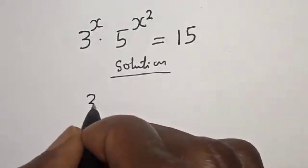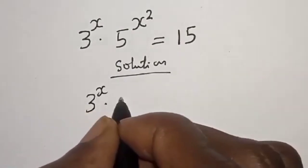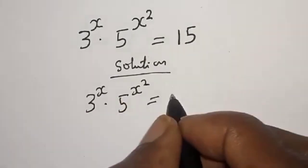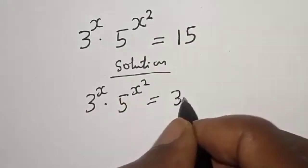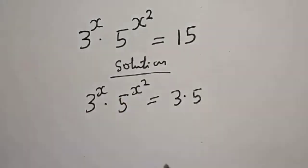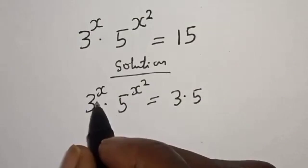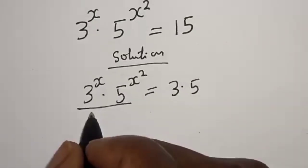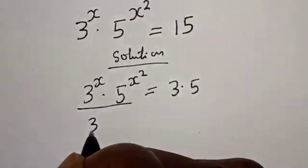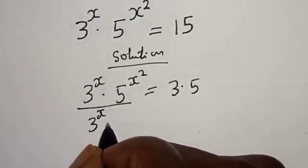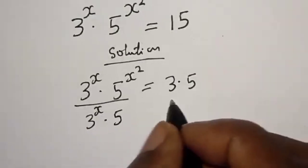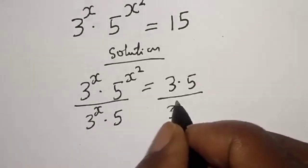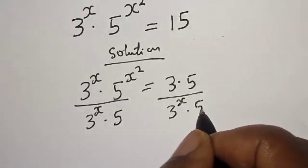We note that 15 is equal to 3 multiplied by 5. Now let's divide both sides by 3 raised to power s and by 5, so we divide by 3 raised to power s multiplied by 5.